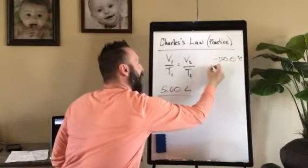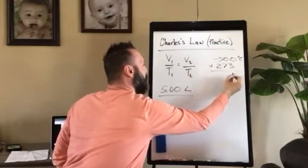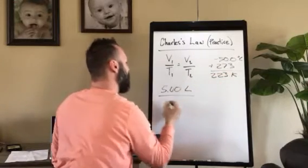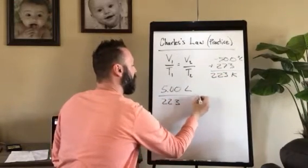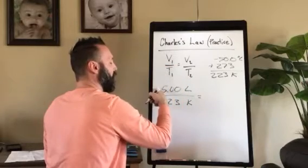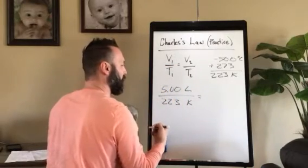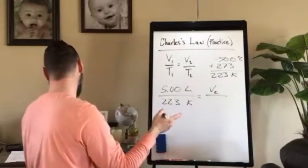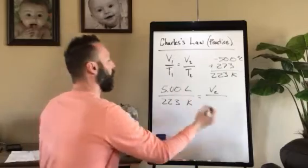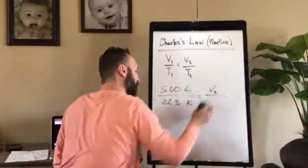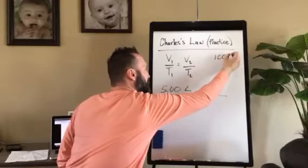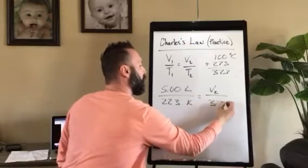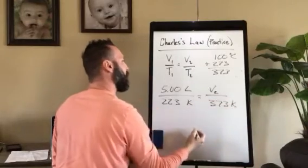So again, we need to add 273 to get it to Kelvin. Negative 50 plus 273 is 223. So our volume of our first gas is linked with the temperature of 223 Kelvin. We don't know our volume of the second gas and the temperature increased to 100 degrees Celsius. So we're going to take our 100 degrees Celsius, add 273 to get it to Kelvin, which is 373. 373 Kelvin is our temperature of 2.